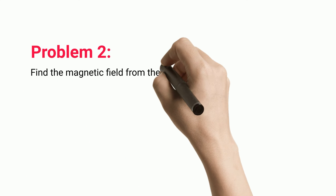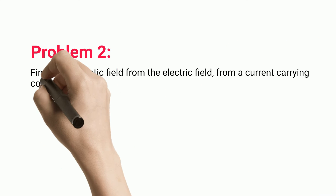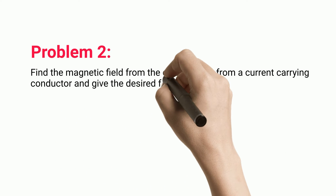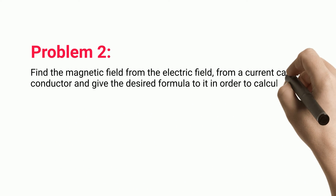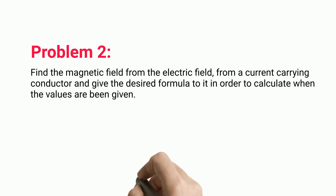Problem two: Find the magnetic field from the electric field from a current-carrying conductor, and give the desired formula to calculate it when values are given.